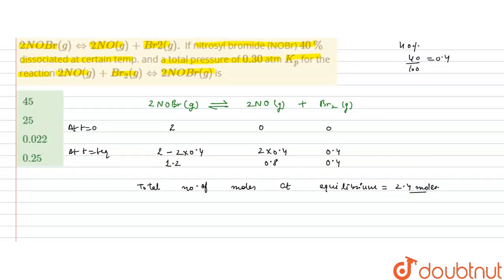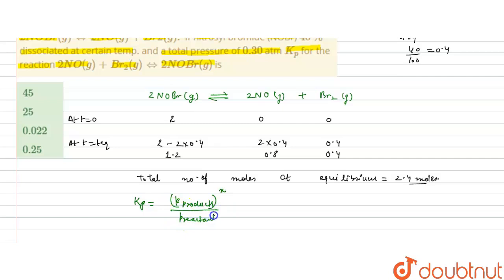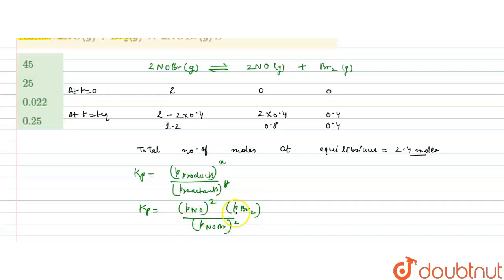The total pressure at equilibrium is given as 0.3 atmosphere. We now write the Kp expression. Kp is the partial pressure of products raised to their stoichiometric coefficients divided by the partial pressure of reactants raised to their stoichiometric coefficients. For this reaction: Kp = (P_NO)² × (P_Br₂) / (P_NOBr)².